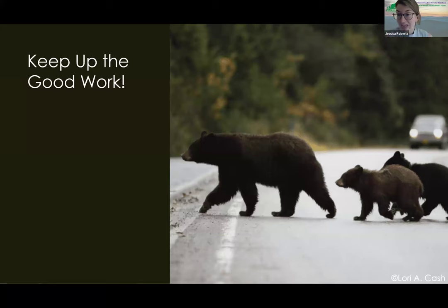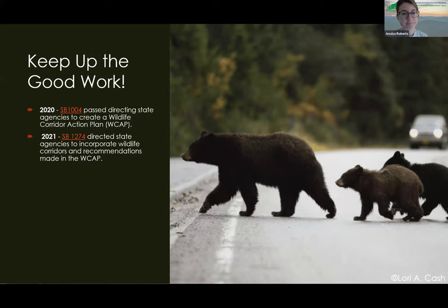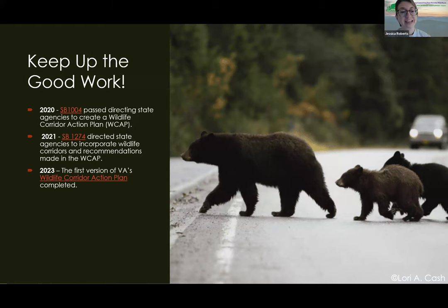However, Wild Virginia and our wonderful partners have been doing quite a lot to get some mitigation happening for wildlife-vehicle conflict and to enhance our biodiversity. In 2020, legislation was passed by the state to create the Wildlife Corridor Action Plan, where state agencies like our Department of Wildlife Resources and Department of Transportation have to come together and create this action plan to deal with wildlife-vehicle conflict. In 2021, legislation directed these same state agencies to include corridors and recommendations from the Action Plan into their planning.